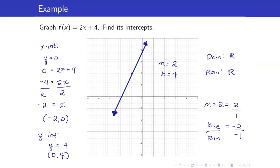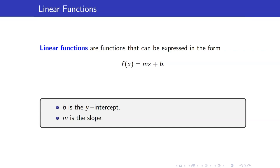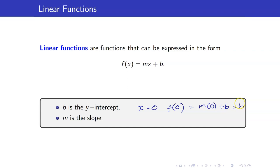In this lesson, I am going to discuss linear functions. Linear functions are functions that can be expressed in the form f(x) = mx + b. This means the highest exponent of x is equal to 1. Note that b is our y-intercept, because when we set x = 0, f(0) = m·0 + b, which equals b. Also, m is our slope — we will talk about slope in the next few slides.